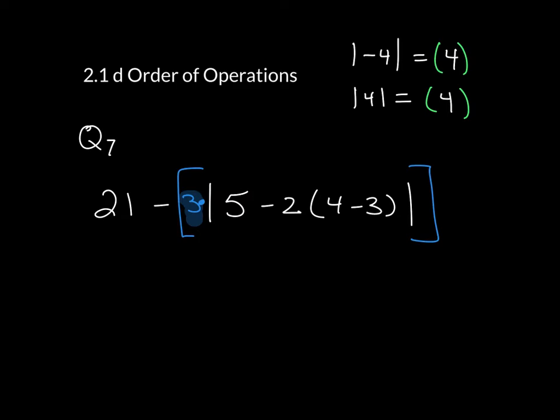All right, so the first thing I'm going to do is simplify the innermost grouping here, which is 4 minus 3. I'm just going to copy everything else down as I work through this. So that gives me 21 minus, and again, I am adding those symbols in just to remind myself that I need to make that 3 times the absolute value of 5 minus 2 times 1.